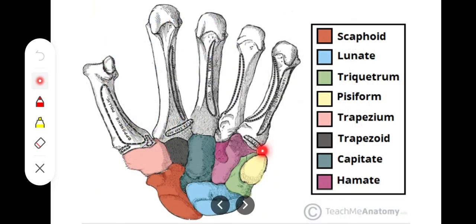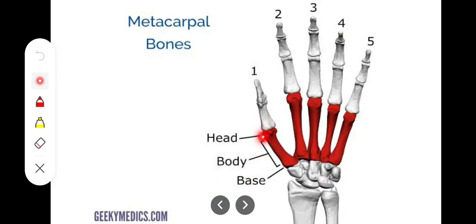So those are the eight carpal bones: scaphoid, lunate, triquetrum, pisiform in the proximal row, and trapezium, trapezoid, capitate, and hamate — with a hook near its base — in the distal row. The next are the metacarpal bones, which form the distal part of the palm. These are five in number and have three main parts: the base proximally, the head distally, and a body in between.